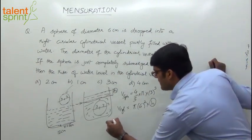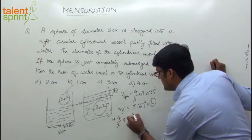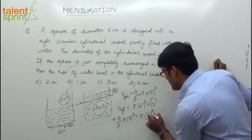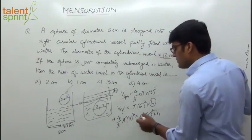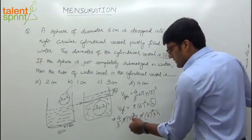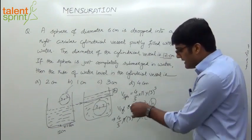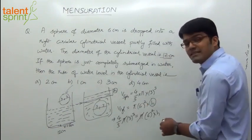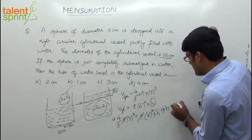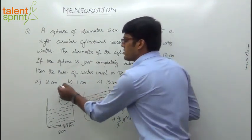So we can say: 4/3 × π × 3³ = π × 6² × h. π cancels on both sides. Now 3³ is 27; 27 divided by 3 is 9; 4 × 9 is 36; 36 divided by 36 is 1. So h = 1. Since all the units are in centimeters, the answer is 1 cm — option B.